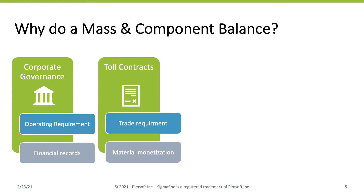Toll contracts: you might be engaged in processing materials of your upstream or downstream business partners, or your facility might have shared resources such as steam or natural gas. Balancing distributes the cost fairly in both situations. In both cases, your internal process data becomes the source data for your financial transactions. And when money is involved, the accuracy of this data set becomes even more important.